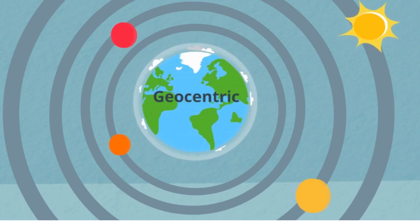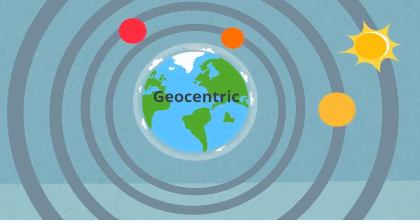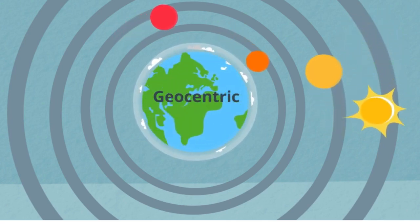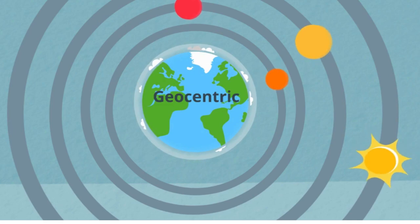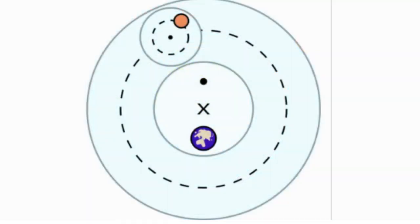However, there were some problems. For example, sometimes the planets appear to be going backwards or to have a retrograde motion. In order to explain this, small orbits called epicycles, which are orbits inside the orbit, were proposed to help explain this backwards motion.